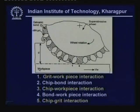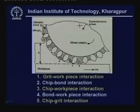With all five interactions, the grinding action continues over the entire workpiece, resulting in material removal and the required finish. During grinding, energy is spent, force is generated, temperature rises, and there is a certain level of specific energy.